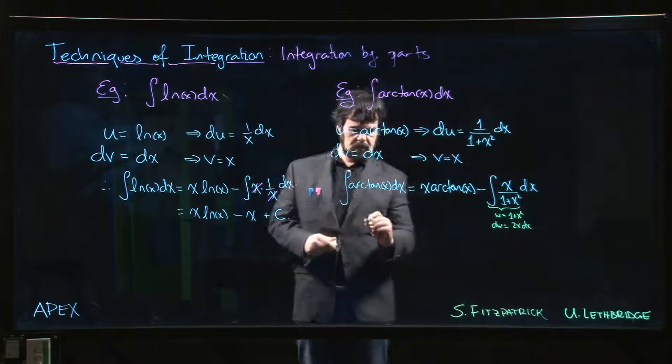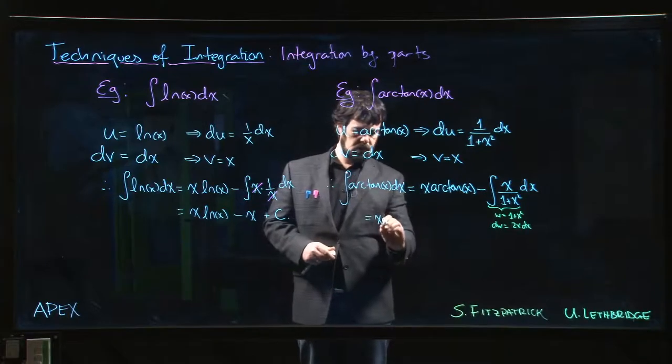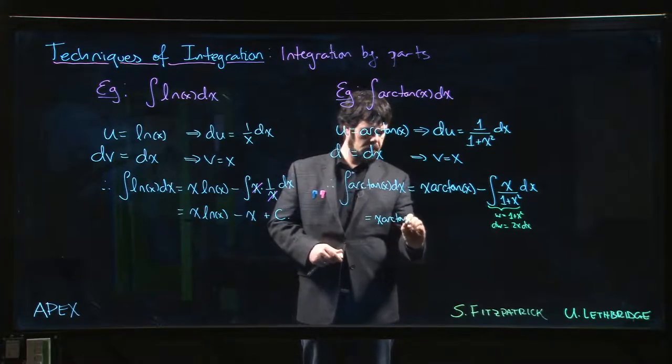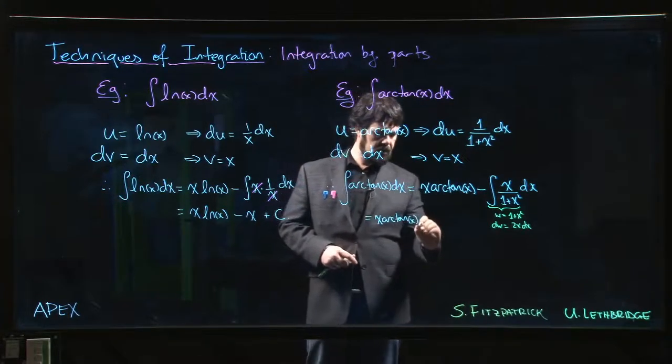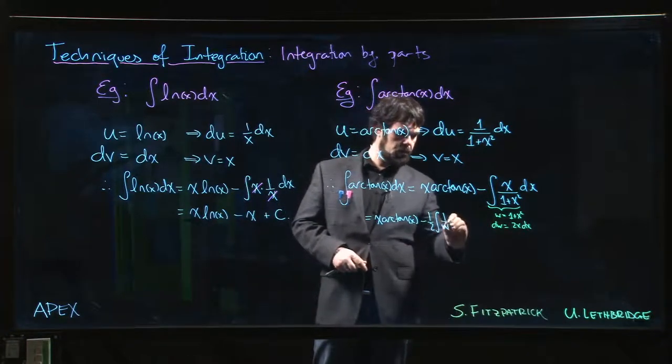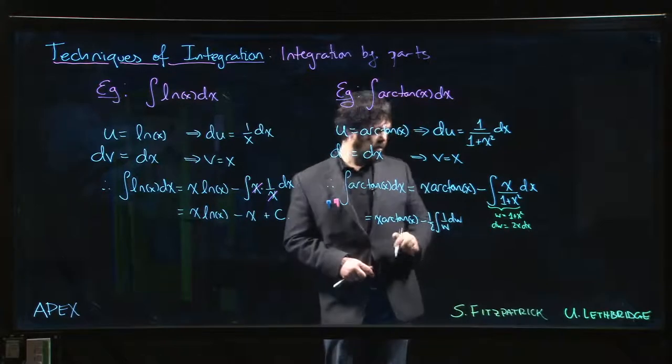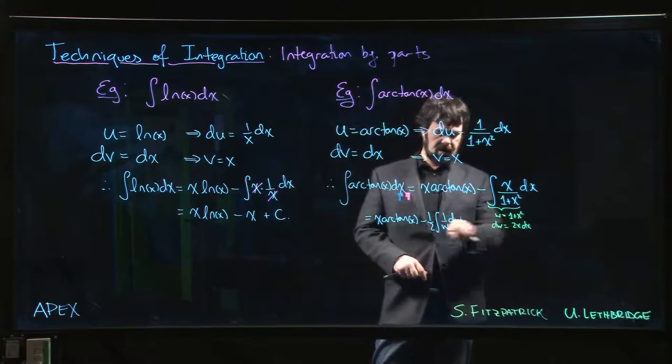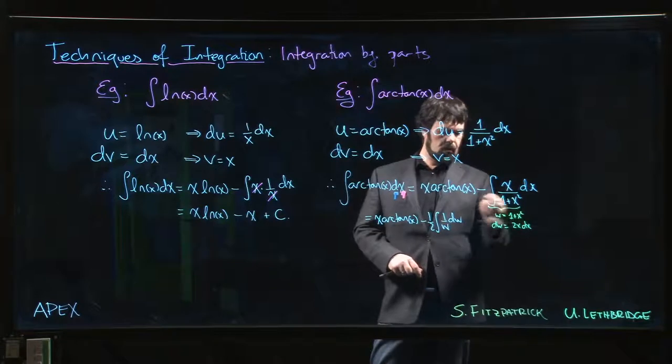So we would get x arctan of x minus 1 over w. x dx is going to be half dw, 1 over w.